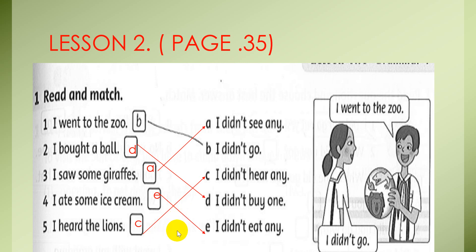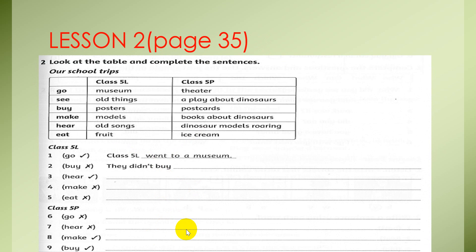Easy. And now we move to the next lesson, number 2, but exercise number 2. You look at the table and complete the sentence. You see our school trips. For example, you look at this table and complete the sentences below. And there are two classes, class 5L and class 5B. The tick mark means they did it, and the X mark means they didn't. I give you 2 minutes to complete this exercise.